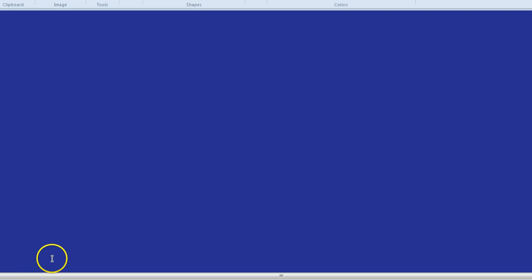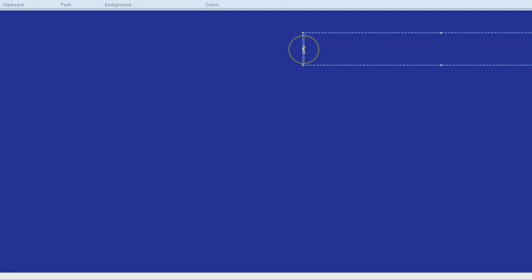We may have heard of SOHCAHTOA, but how do we actually use that to find angles and sides using trigonometry?